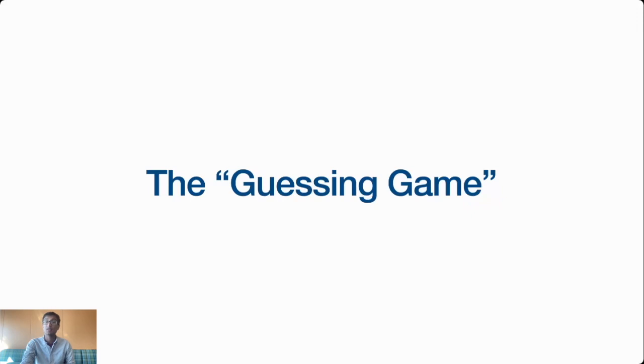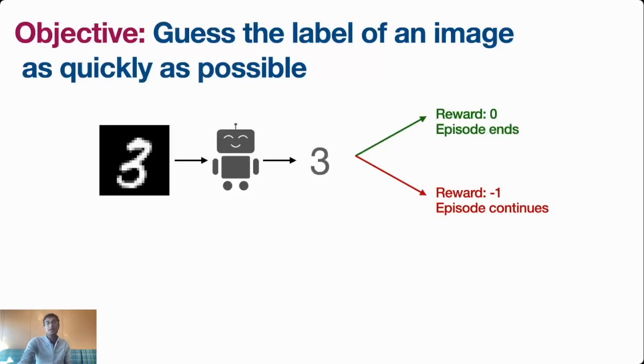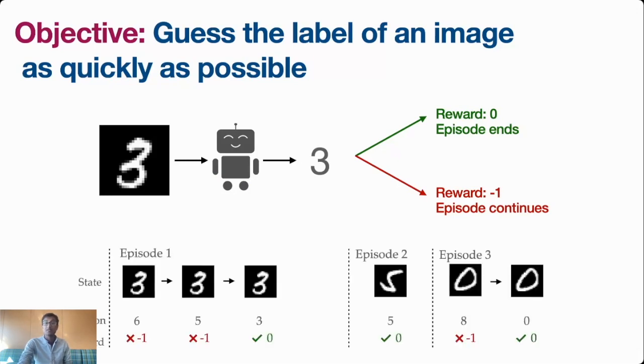In order to understand why, let's go through a little example that I'm going to call the guessing game. The objective of the guessing game is to guess the label of an image as quickly as possible. The agent receives an image's observation and must predict a label. If this label is correct, the episode ends. If the label is incorrect, it gets some penalty and the episode continues. On the bottom here, you see what trajectories in this environment might look like. Notice that it interacts with the same image throughout multiple time steps, meaning it's not a multi-armed bandit, it's not a supervised learning problem, it is an RL problem that is sequentially dependent on time.